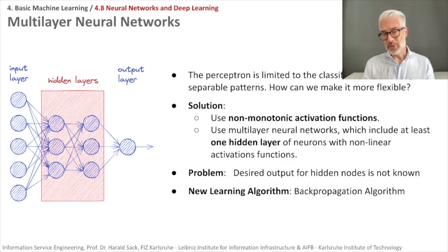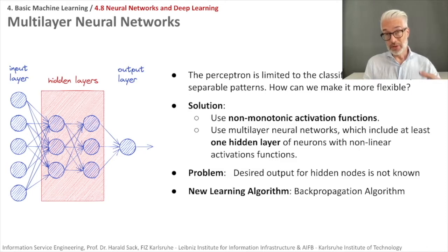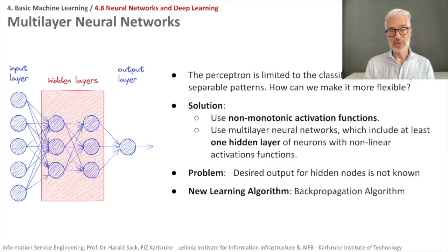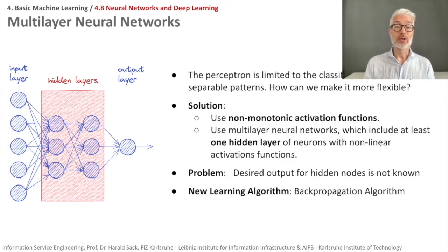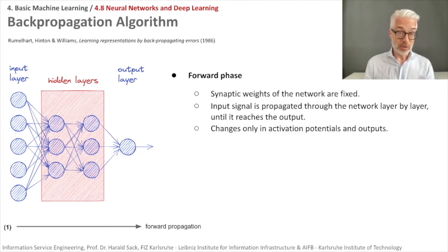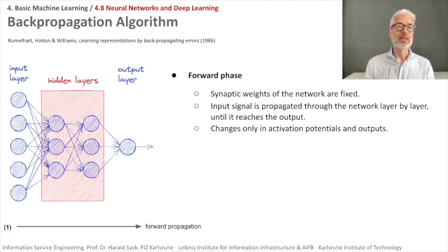The problem was with the standard learning algorithm: you compute your output with your activation function and then adapt your weights by the difference between the desired output and the actually computed output. But how do you do this for the hidden layer? You have no idea what the desired output is there. It took until 1986 until people came up with the so-called backpropagation algorithm, which solved exactly this issue. We won't go into the mathematics — I'll simply explain how it works in principle.